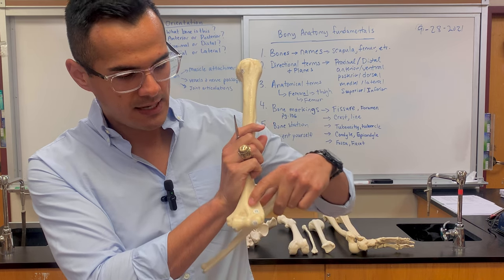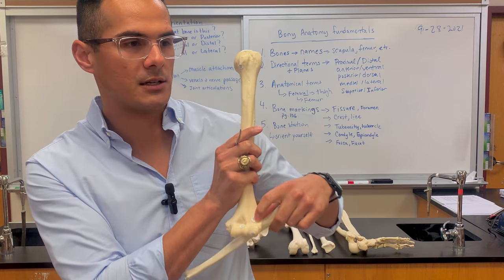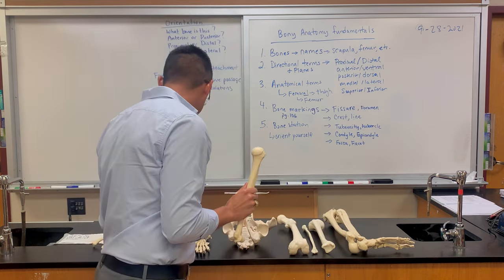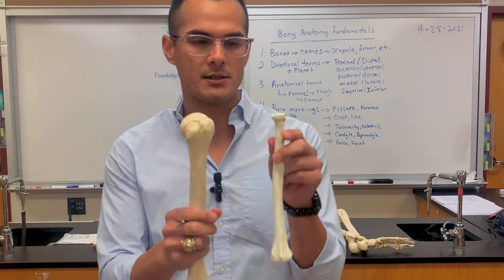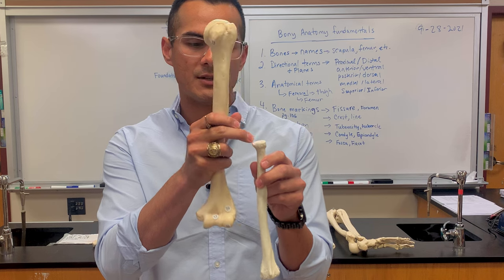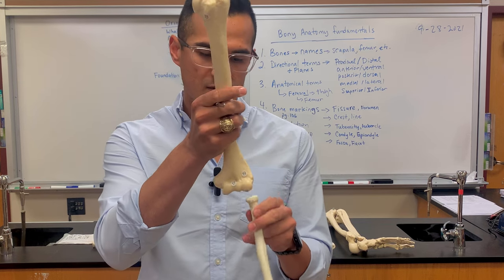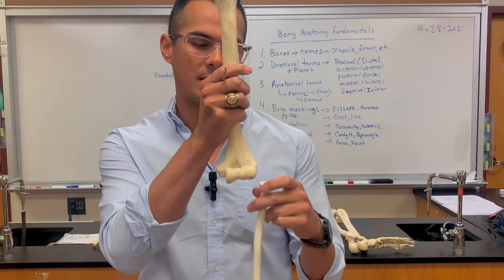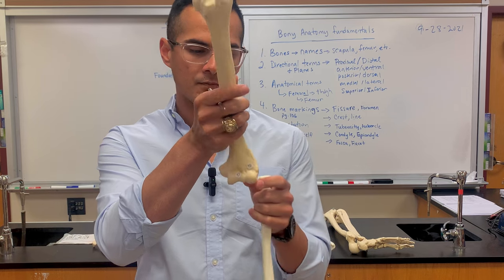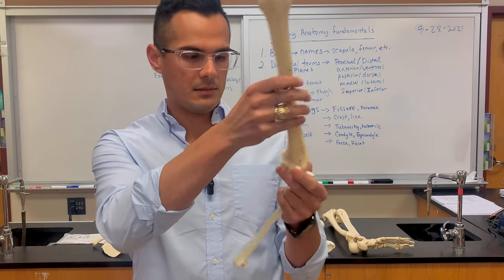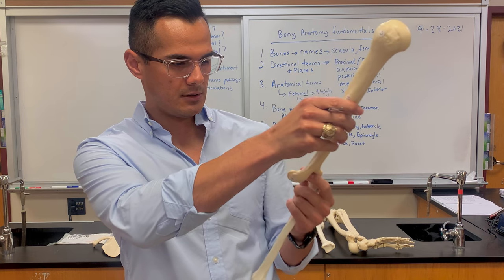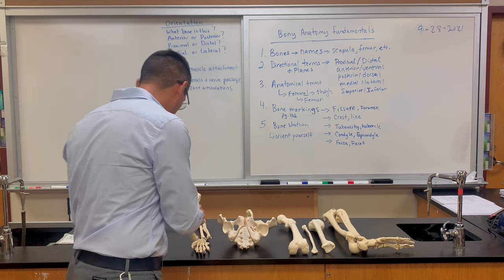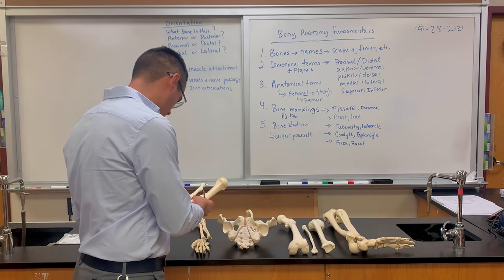The capitulum is here, and number 19 is what's known as the radial fossa. It's called the radial fossa because this bone is the radius, and the head of the radius at the top is what gets received by the radial fossa. That's it for the humerus.